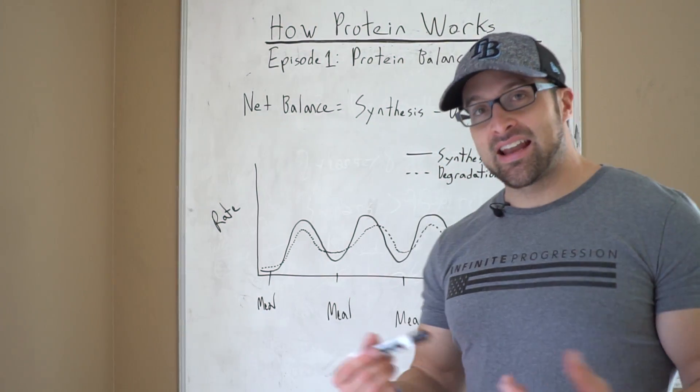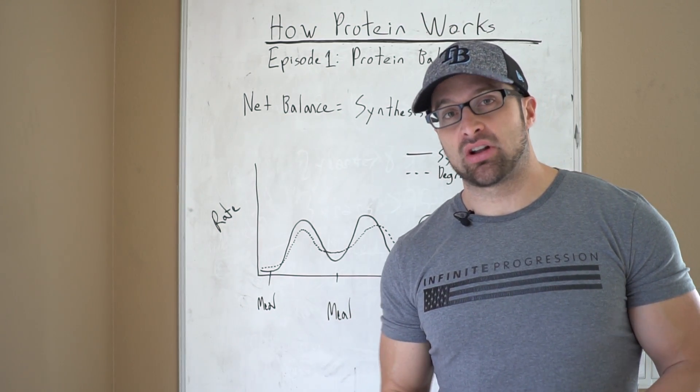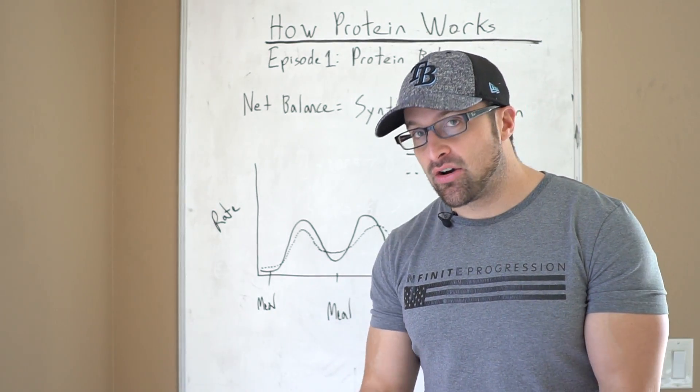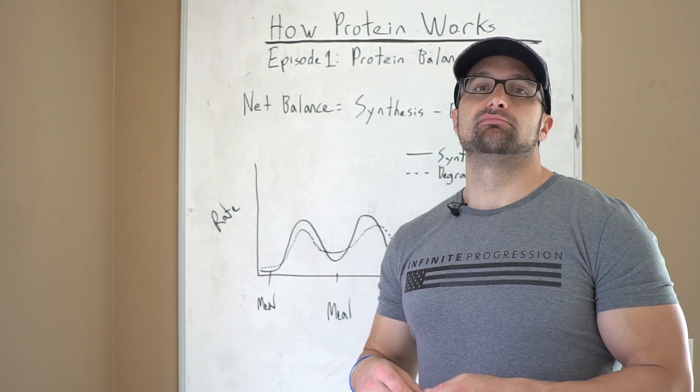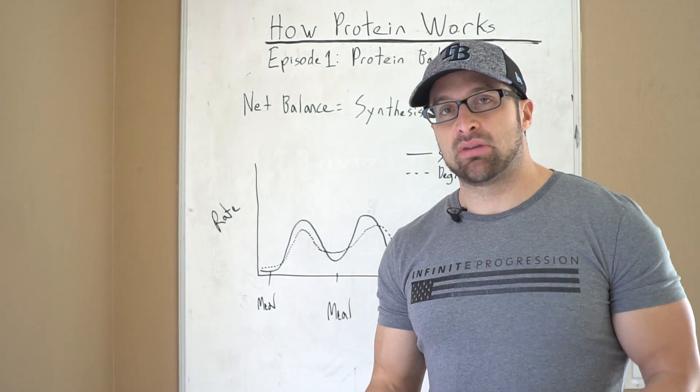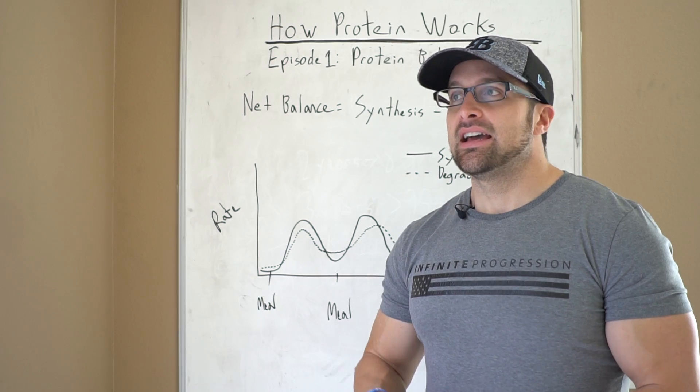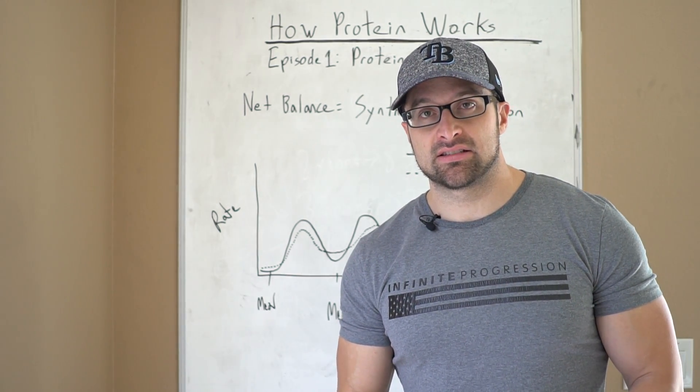Because if we're anabolic, anabolism is the construction of larger molecules from smaller molecules. So we're talking about building muscle, the myofibrils, actin, myosin, these contractile muscle proteins that you require to build more muscle tissue. This is all protein. It's made up of amino acids.